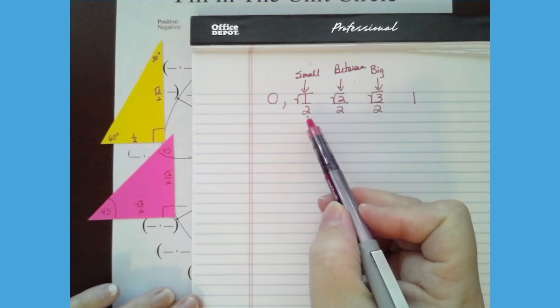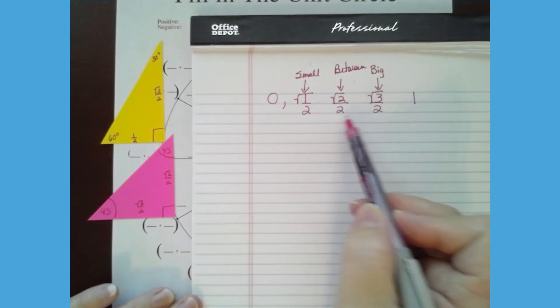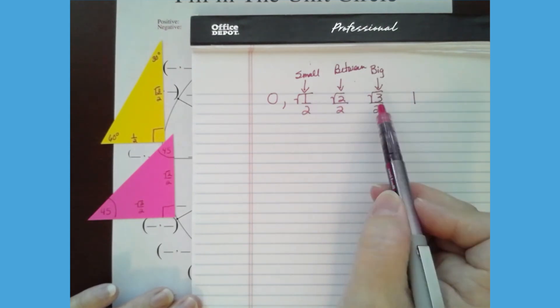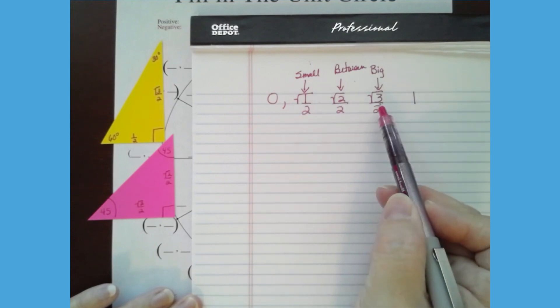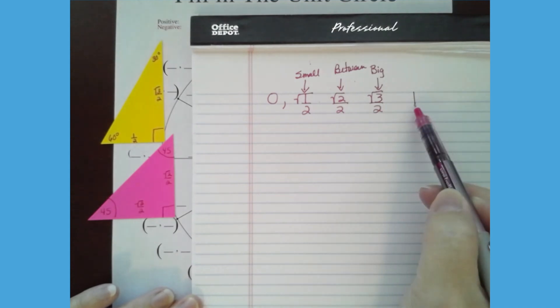And I know that because if you compare fractions and they have the same denominator, then you just compare the numerators. And the square root of one would be less than square root of two, which would be less than square root of three. And we know that all of these are less than one because one is the largest value you can have because the radius of the circle is one. You can't go outside the radius.